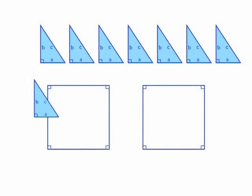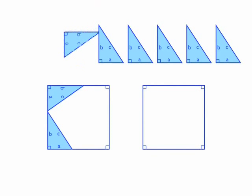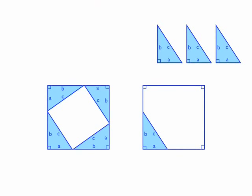Let's slide the first triangle into the bottom left corner of the first square. Let's rotate the second triangle clockwise 90 degrees and then slide the triangle into the top left corner of the first square. Let's rotate the third triangle 180 degrees and then slide it into the top right corner of the first square. The fourth triangle we will rotate clockwise 270 degrees, and then slide the fifth triangle into the bottom left corner of the second square.